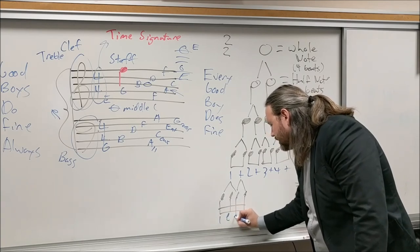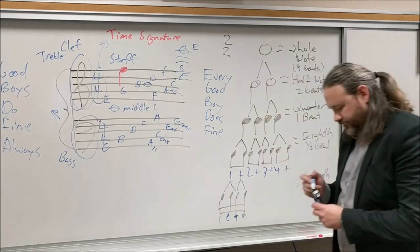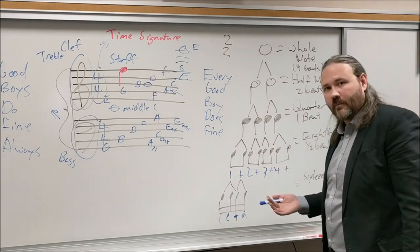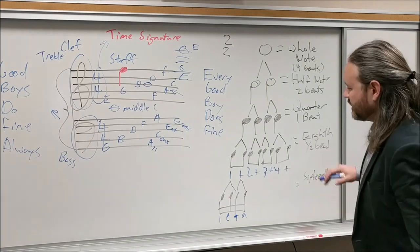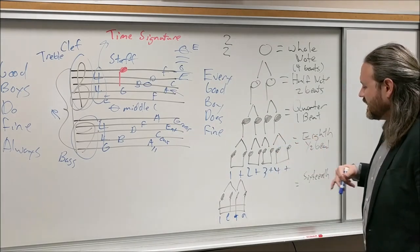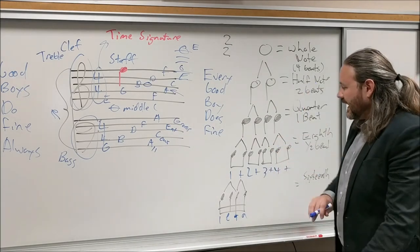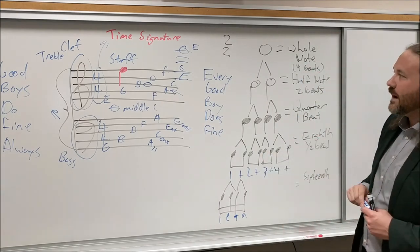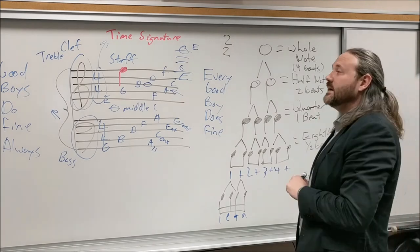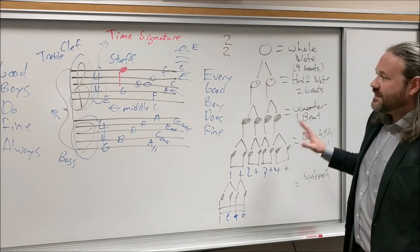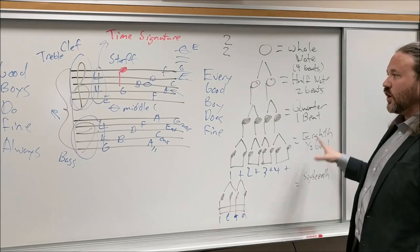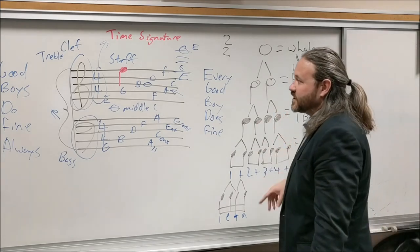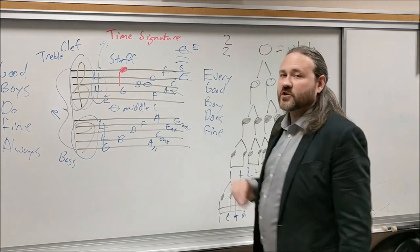The counting system I use is 'one-e-and-a' — different people use different systems, like 'one-ta-ta-ta,' but I do 'one-e-and-a' and that's what I'll use in this video series. So this is most of the information you need to decode written music: where the note is placed tells you what note it is and where it is on your instrument.